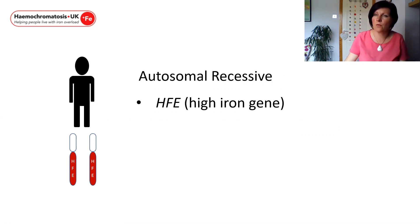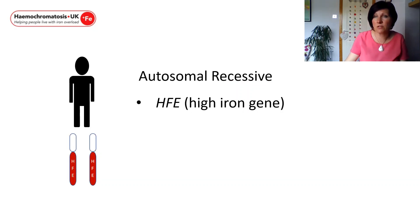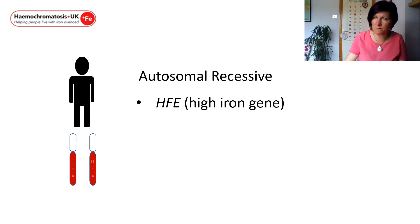We inherit one gene from our mothers and one from our fathers. In recessive conditions you need to inherit a variant — a genetic spelling mistake — on both copies of your gene in order to be at risk of developing symptoms.